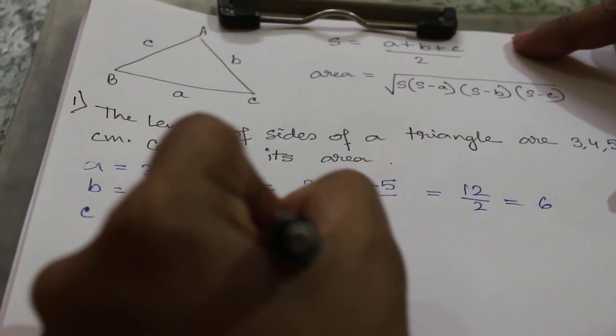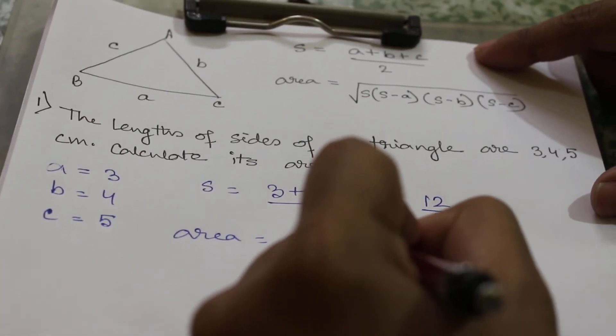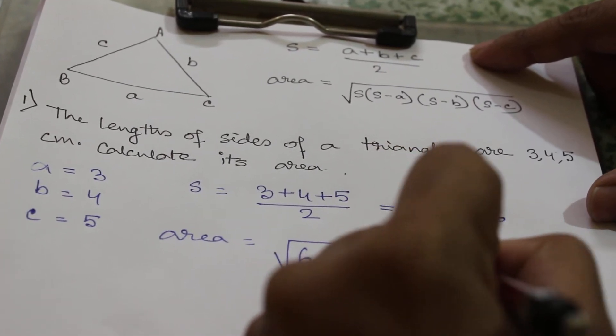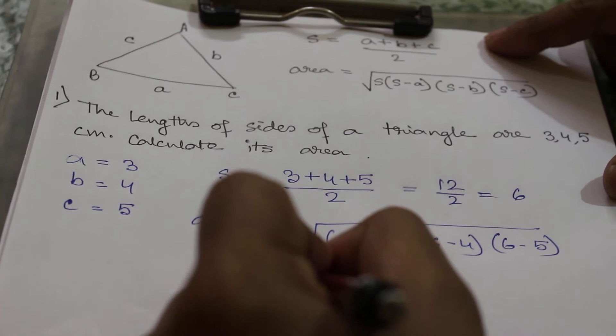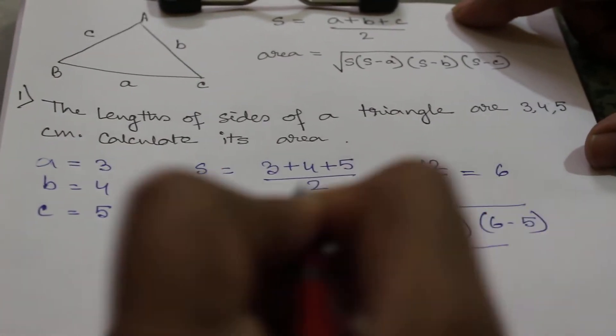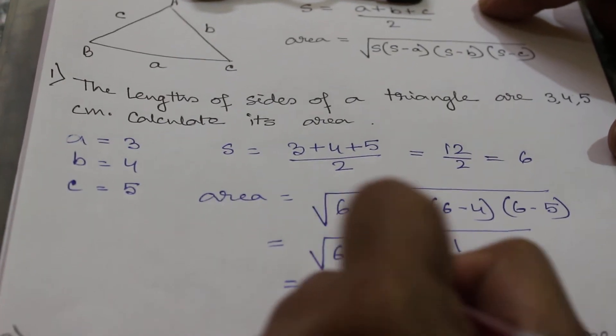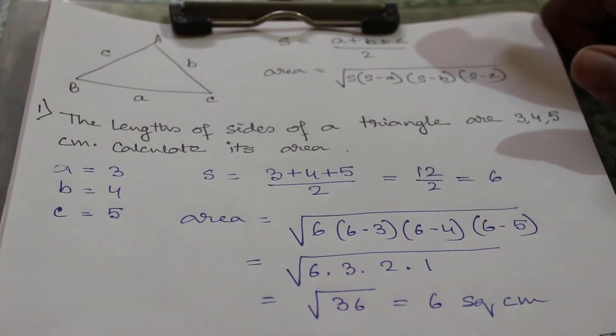So area equals √[6(6-3)(6-4)(6-5)]. If you calculate this, it will be √(6×3×2×1) = √36 = 6 square centimeters. This is the area.